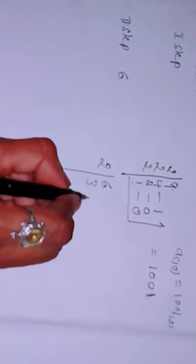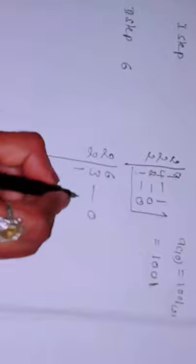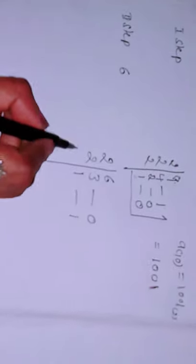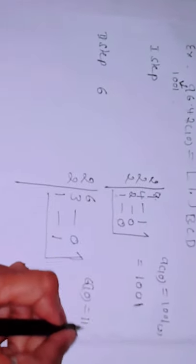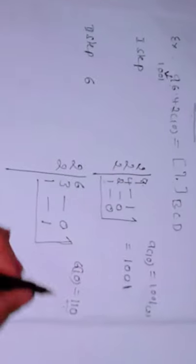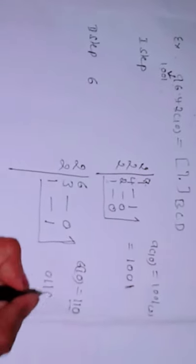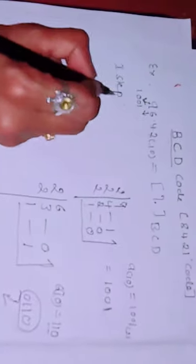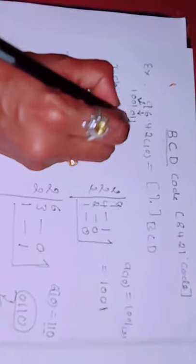6. Again, 6 divided by 2. 2 threes are 6, remainder 0. 2 ones are 2, so remainder 1. Now we cannot divide. So 1, 1, 0. So the decimal number 6 converted into 1, 1, 0. But in case of BCD code, we express in terms of 4-bit number. If we put 0 at the front, there will not be any changes. Therefore, I will express this 6 as 0, 1, 1, 0.